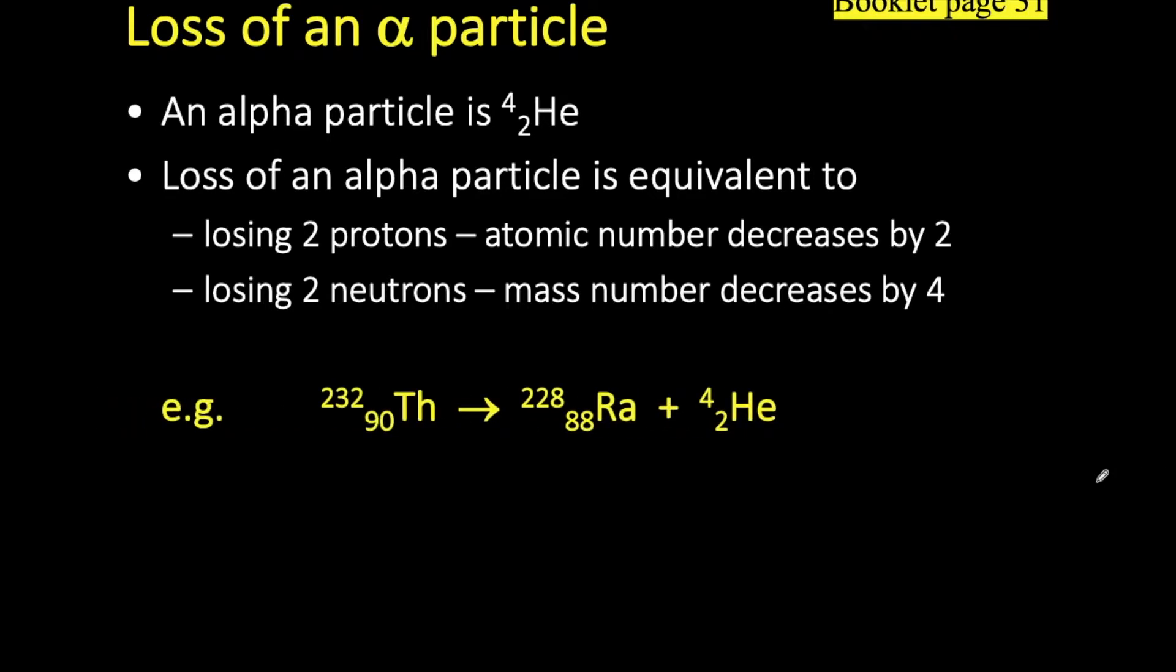So here we have an example of alpha decay. On our left hand side we have the thorium atom. It has an atomic number of 90 and a mass number of 232. Now it undergoes alpha decay, so the loss of an alpha particle to produce radium.